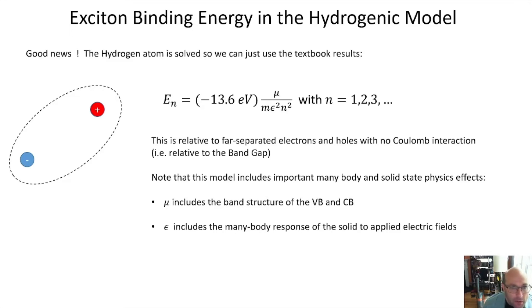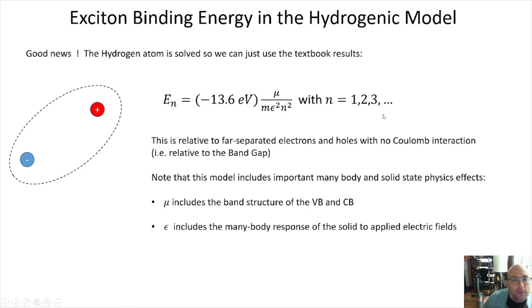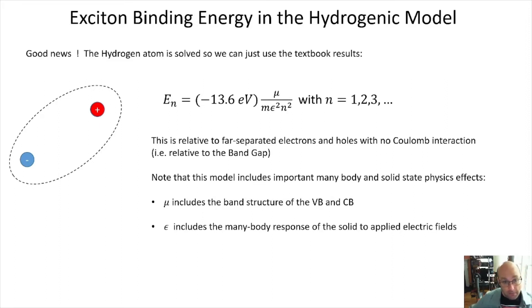The energy eigenvalues are: E_n = −13.6 eV × (reduced mass / bare electron mass) / (dielectric constant squared × n²), where n = 1, 2, 3, etc. It's important to know the reference point: this is the binding energy relative to infinitely separated electron-hole pairs where the Coulomb interaction has gone to zero — in other words, binding energy relative to free or independent charges in the conduction and valence bands.